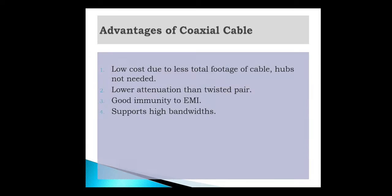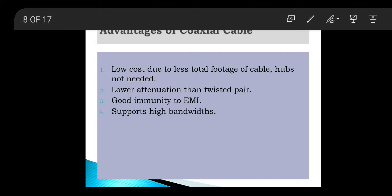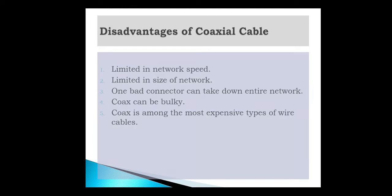Advantages of coaxial cable: low cost due to less total footage of cable; hubs not needed; low attenuation compared to twisted pair cable; good immunity to electromagnetic interference using braided shield; and supports high bandwidth. Disadvantages: limited in network speed; limited in size of network; one bad connector can take down an entire network; coaxial cable can be bulky; and it is among the most expensive types of wire cables.